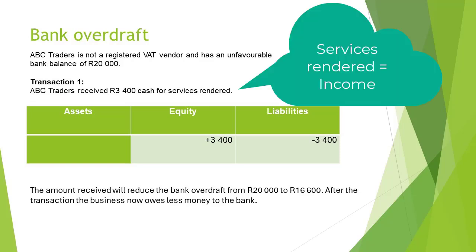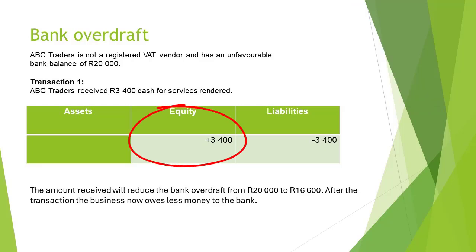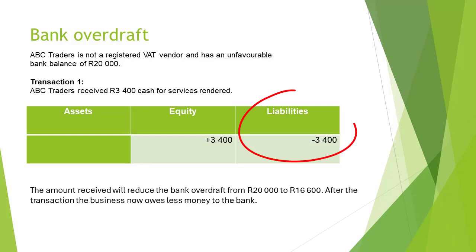Services rendered is classified as income and will be credited. The equity account will therefore increase with an amount of 3,400 Rand. The bank account will be debited with 3,400 Rand. Liabilities will therefore decrease since the amount received will reduce the bank overdraft.